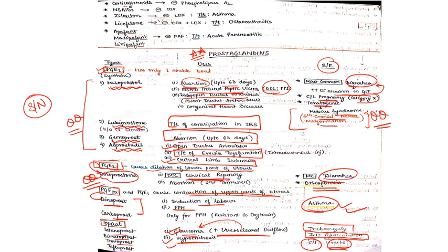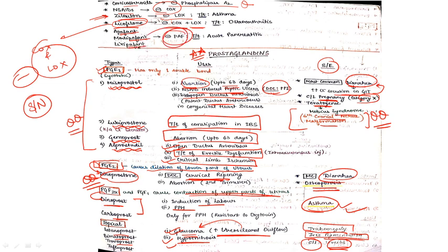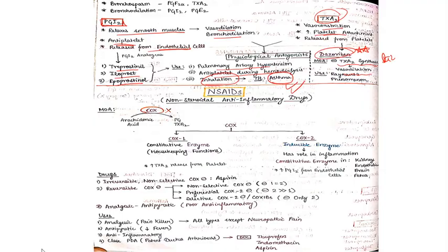Now some drug classifications: corticosteroids inhibit phospholipase A2. NSAIDs inhibit COX enzyme. Zileuton inhibits LOX enzyme. Licofelone inhibits both COX plus LOX. Remember licofelone inhibits COX and LOX both. Then epifant, morifant, and lexipafant - they inhibit platelet activating factor, so they can be used for the treatment of acute pancreatitis.